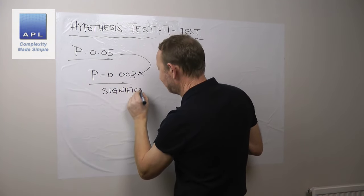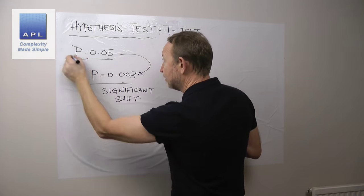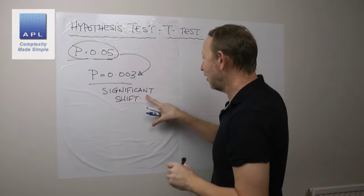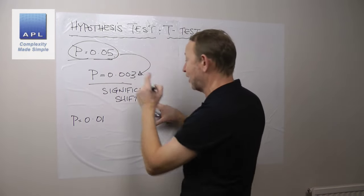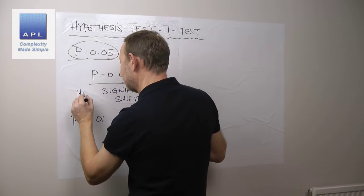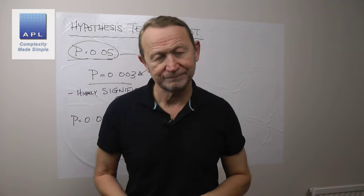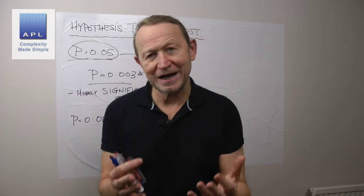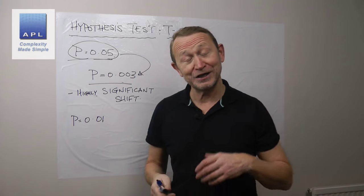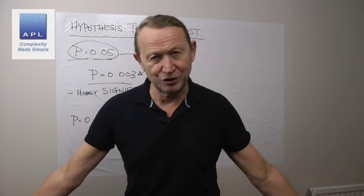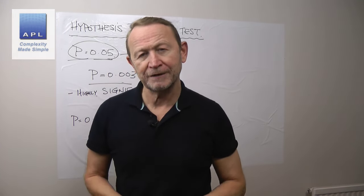We can conclude that we have a significant shift. The reason I'm saying significant is because we beat 0.05. Actually, since we also beat 0.01, the shift is said to be highly significant. That's a data set where there is a significant shift, and the p-value is your chance of being wrong if you conclude that you created the shift with your new way of running the process.